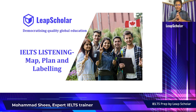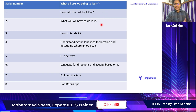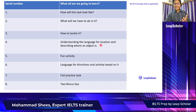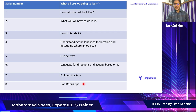Please feel free to refer to all those videos. Today we are going to look at eight things based on IELTS listening map, plan and labelling questions. First, how will the task look like? Second, what will we have to do in it? Third, how to tackle it? Fourth, understanding the language for location and describing where an object is. Fifth, there is a fun activity. Sixth, language for directions and an activity based on it. Seventh, a full practice task we will solve together, and finally at the end I will give two additional bonus tips.